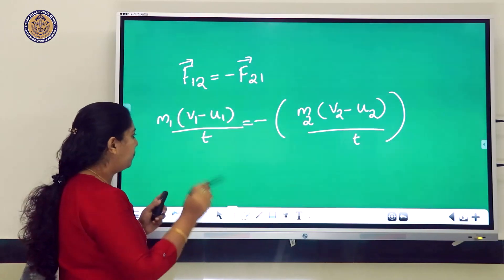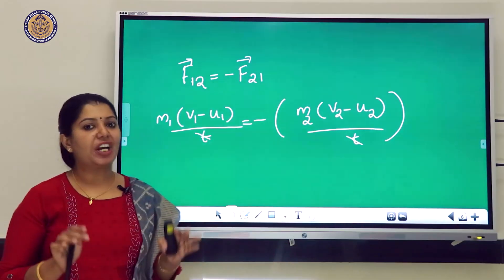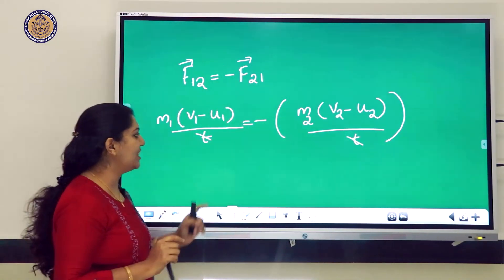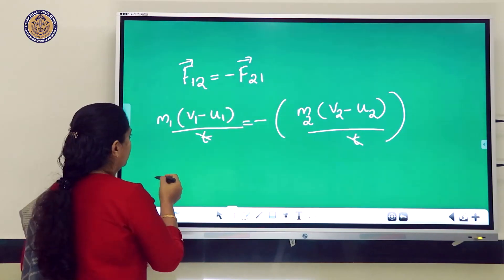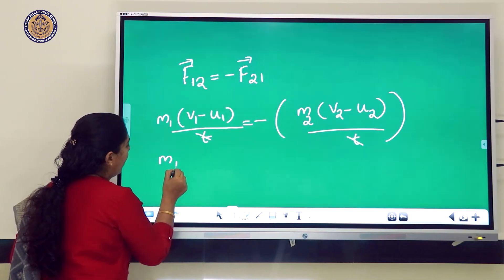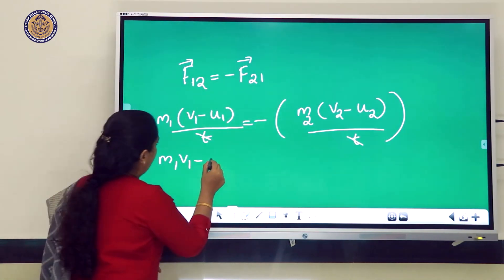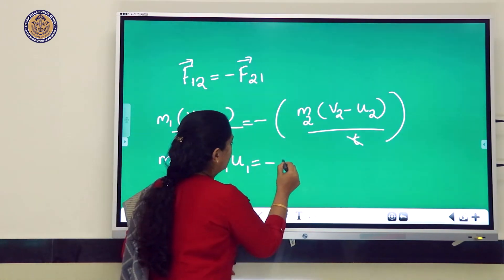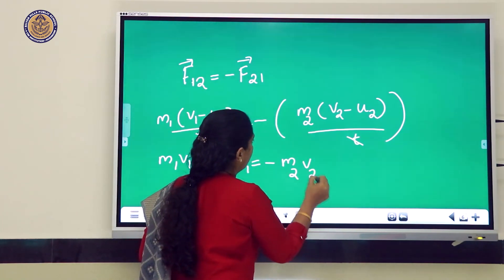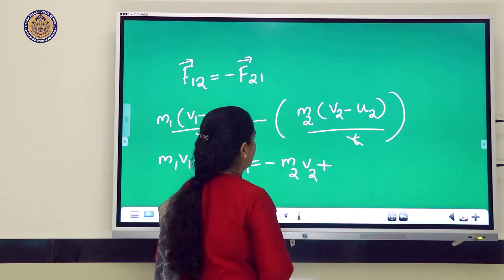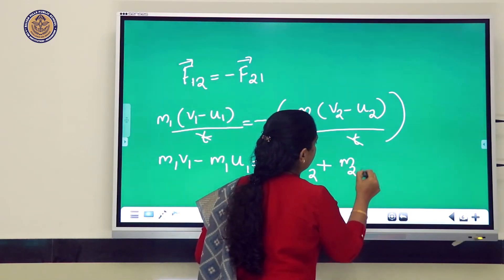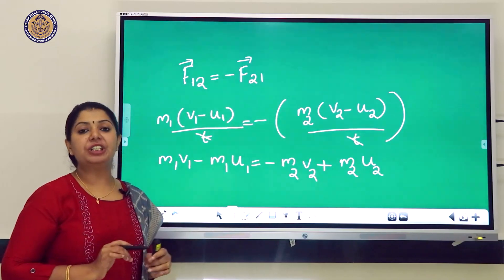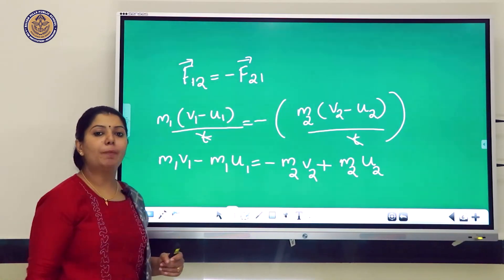After cancelling t and opening the brackets, we get: m₁v₁ − m₁u₁ = −m₂v₂ + m₂u₂. Now we want to write all positive terms together by moving the negative terms to the other side.